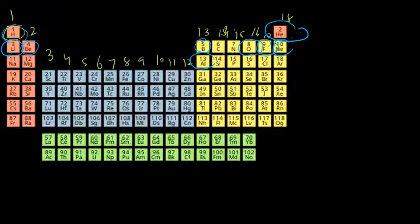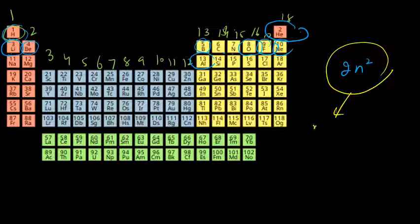The maximum number of electrons in any shell can be calculated as 2n², where n is the principal quantum number. This formula gives the maximum number of electrons that can be filled within any given shell.